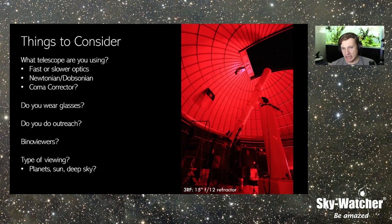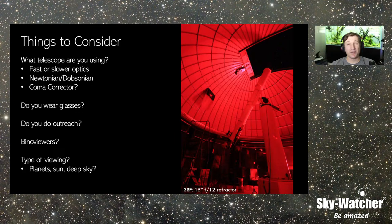Lastly, think about the type of viewing you're going to be doing — planets, the sun, deep sky. A lot of modern eyepieces are very flexible and universal for different types of observing, but I've found that if you like doing planets, the sun, or trying to squeeze every ounce of light from your telescope, there are certain eyepiece designs that may be more beneficial for that particular type of use.